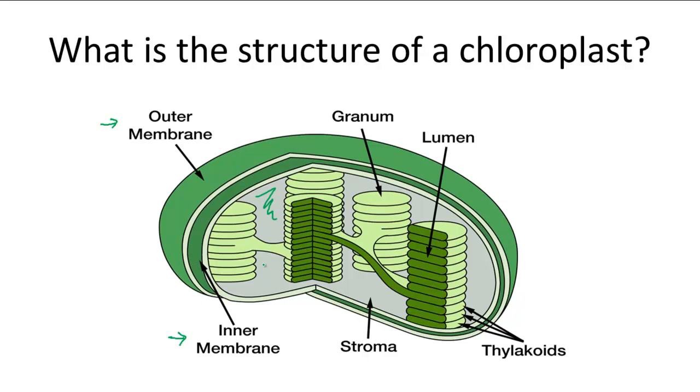Within the inner membrane is a fluid called the stroma. If you remember, in mitochondria, the inner membrane and the intermembrane space were both sites of cellular respiration processes. But this is different in chloroplasts.